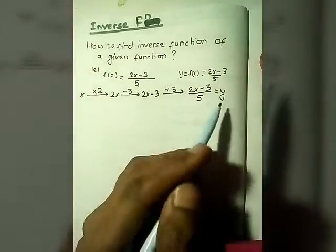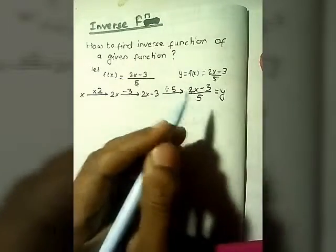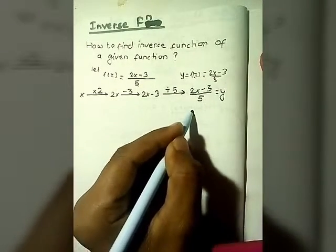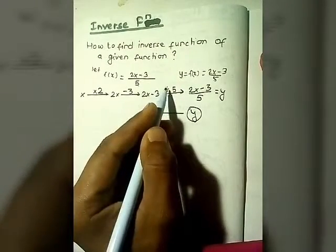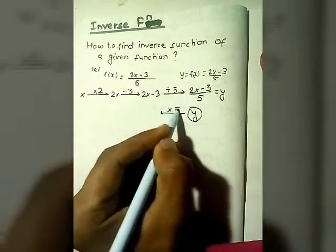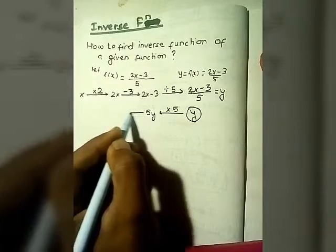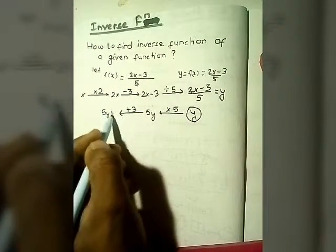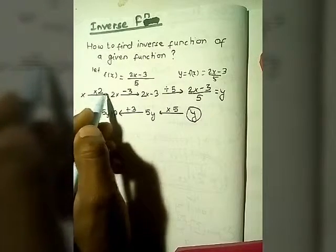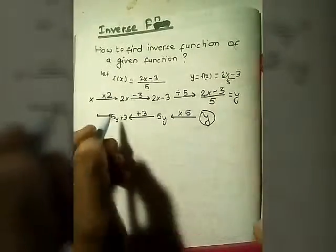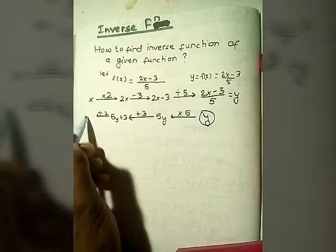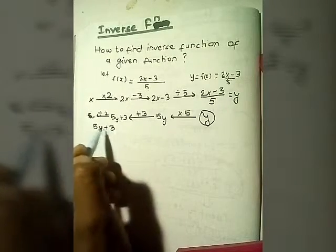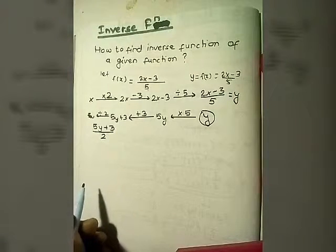Now for the inverse, we go in the reverse direction, starting from y. Since there was a divide by 5, we do the opposite and multiply by 5, giving 5y. Then instead of subtracting 3, we add 3, giving 5y plus 3. Finally, since there was a multiply by 2, we divide by 2, giving 5y plus 3 divided by 2.